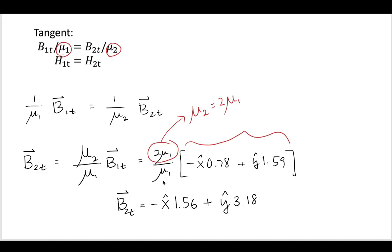Now, taking this coefficient, which is based on the material properties, multiplying it by the B1 tangent, I arrive at the expression for B2 tangent. So now we have the B2 normal and the B2 tangent.